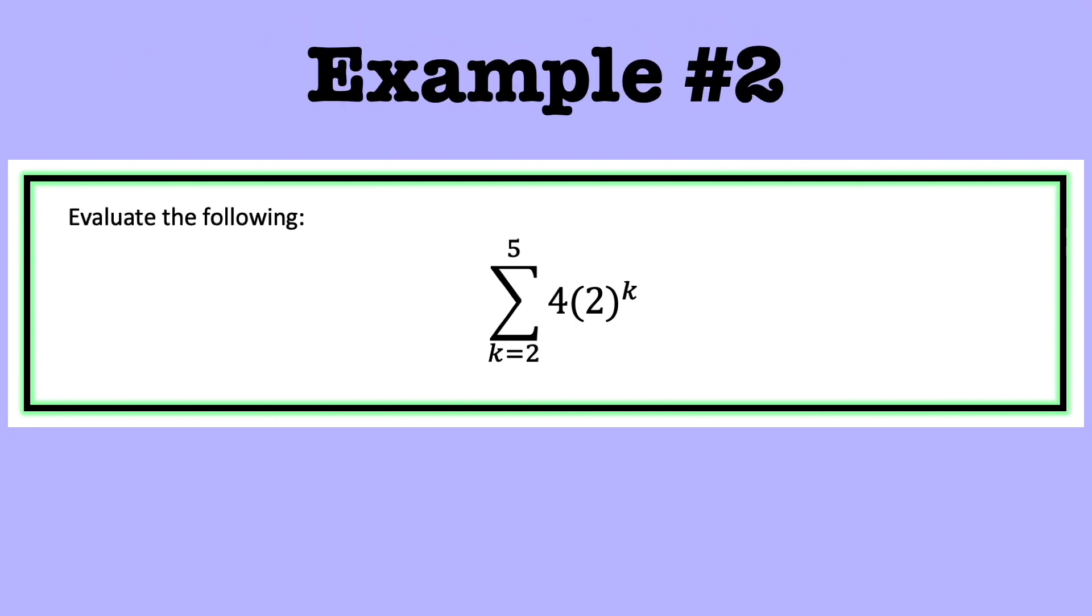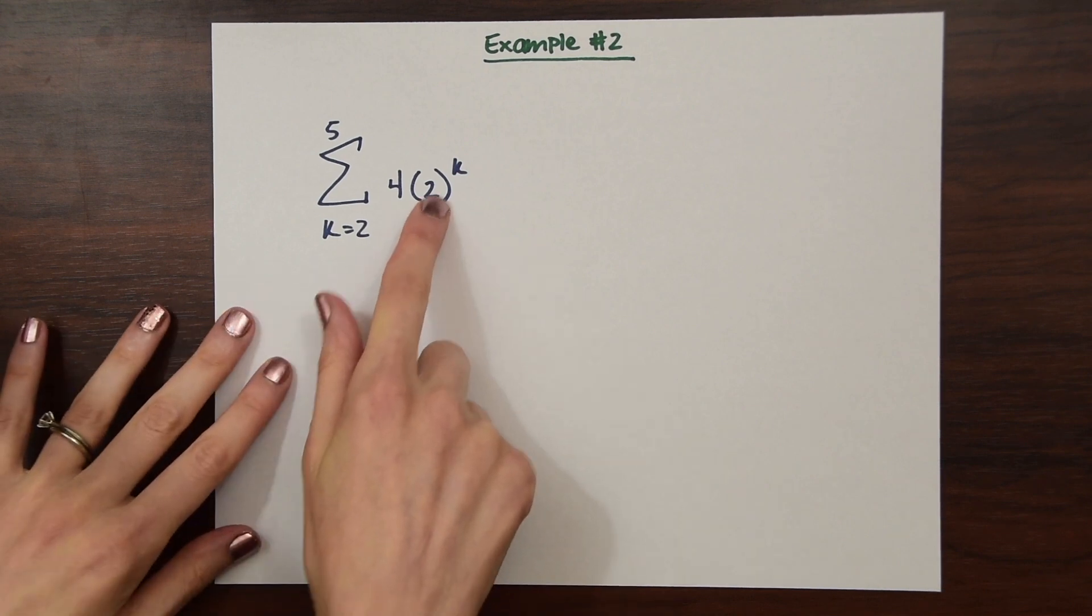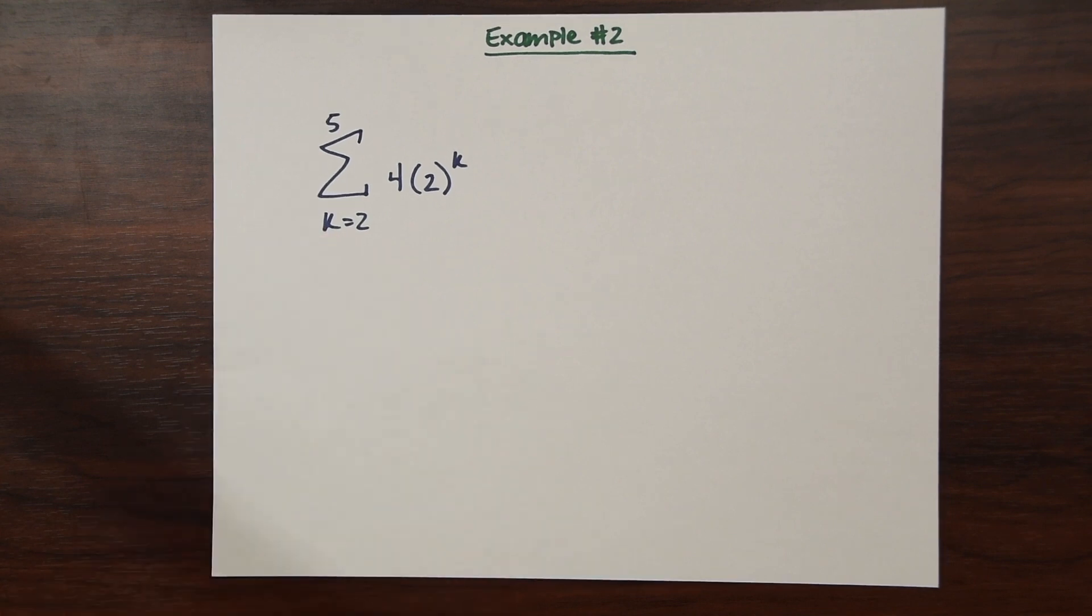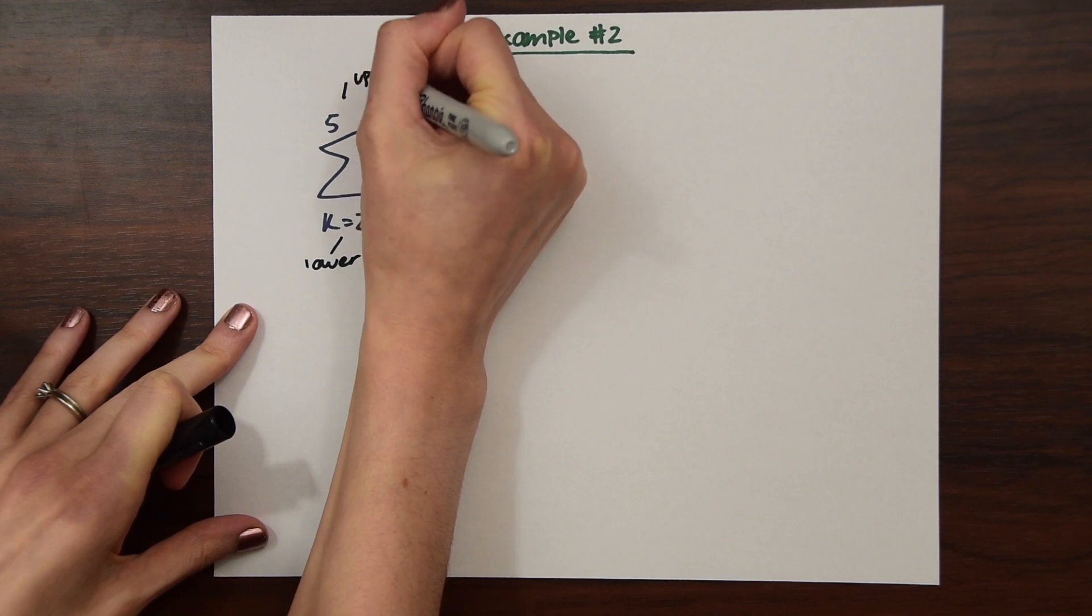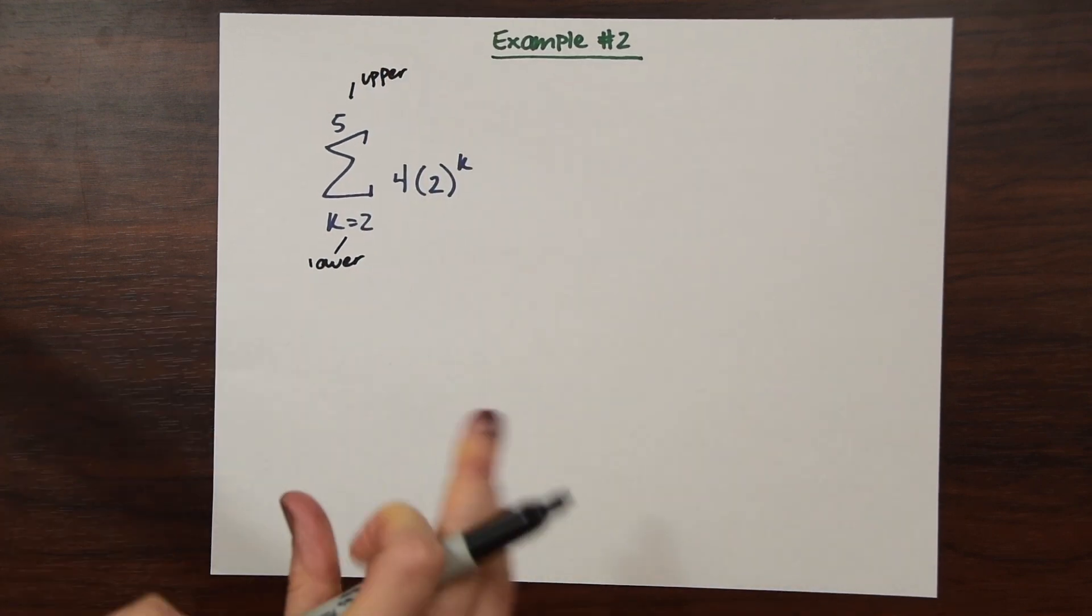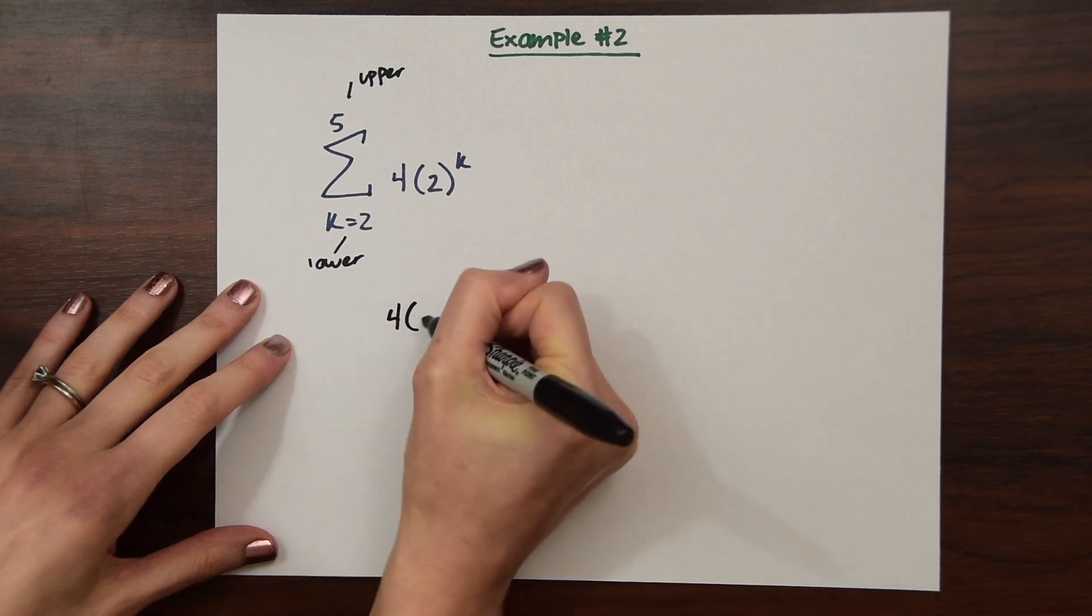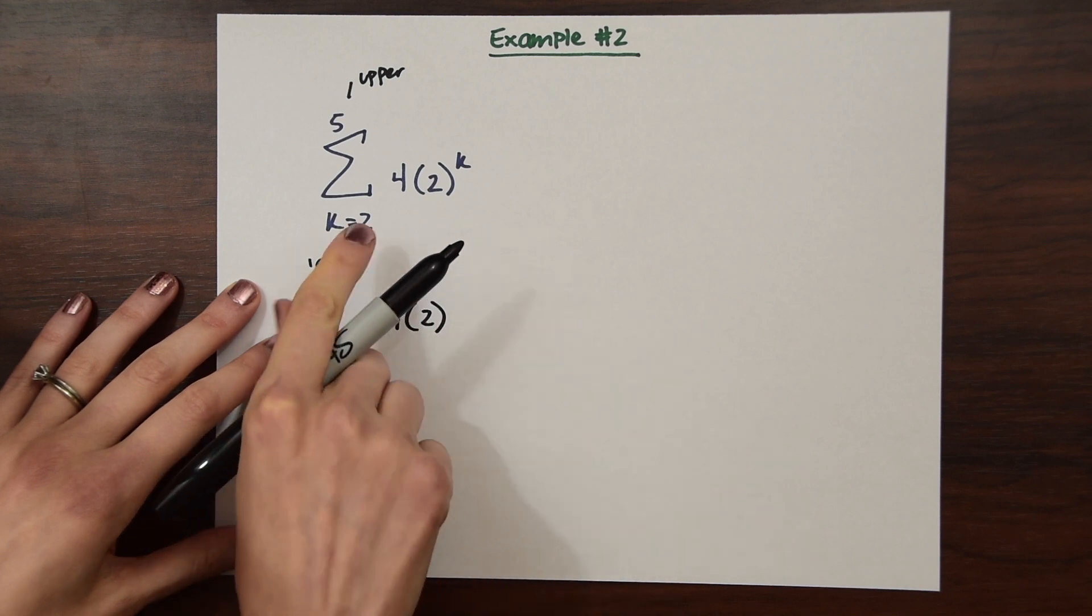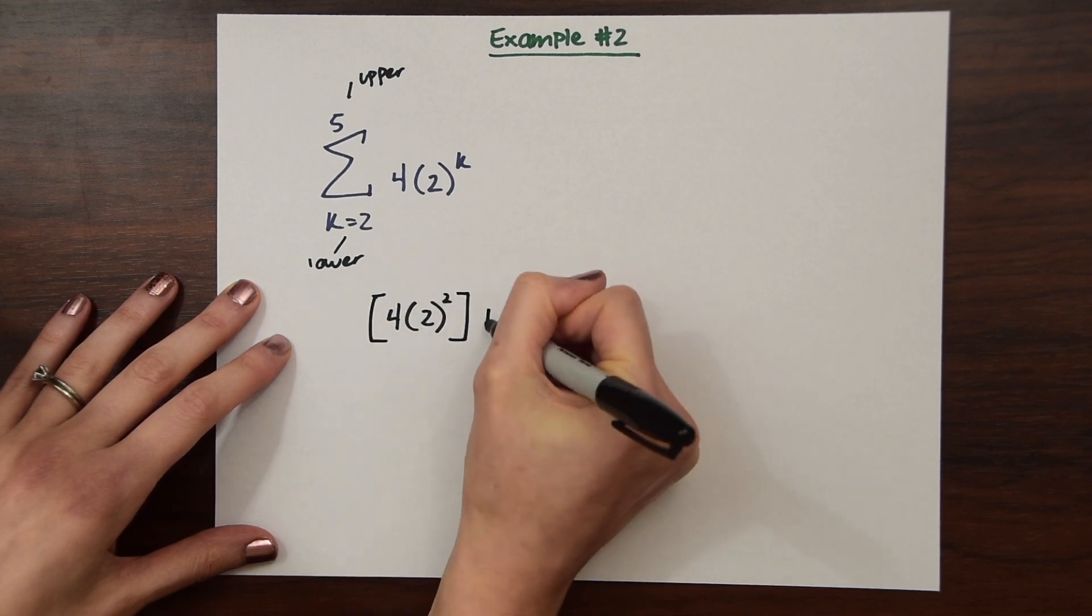So here's our next example. We're just going to do one more of these and it asks us to find the sum of 4 times 2 to the k for the values of k from 2 through 5. So right, this is the lower limit and the upper limit for k. So when we do this, let's write all of this out. So we have 4 times 2 to the k. But now our range is going to start at 2, so here we're going to plug in 2 for k. And this is one little group, one little family.